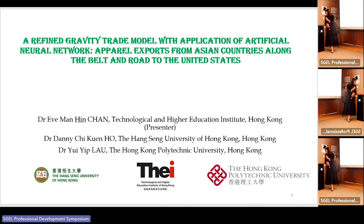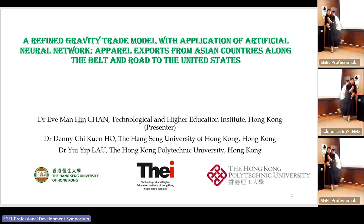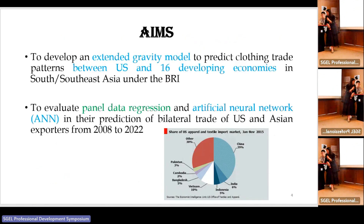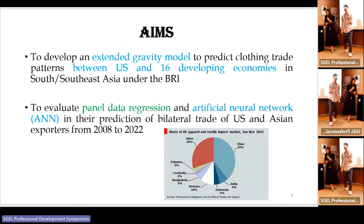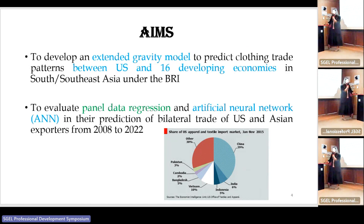From this graph you can see there is a 39% share of US apparel and textile imports from China. China is the most important global factory in the world. The next largest supplier has only a 10% share, so China is a very important clothing and textile exporter to the USA.